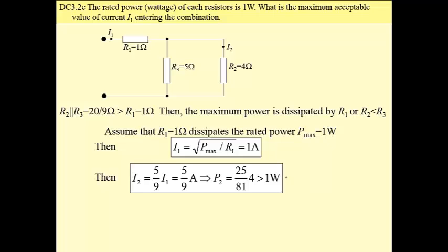As we can see, this power is greater than 1 watt, more than the rated one, which means that R sub 2 dissipates actually more power than R sub 1.